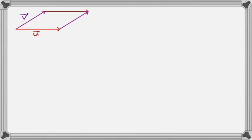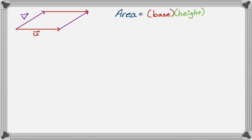Now we're going to label some things. So let's call this vector u, this vector v. The area of a parallelogram is just the base times the height. The base of our parallelogram is the magnitude of vector u. It's really the height we need to figure out. So let's fill in theta, because if you have two vectors, you pretty much always fill in theta.